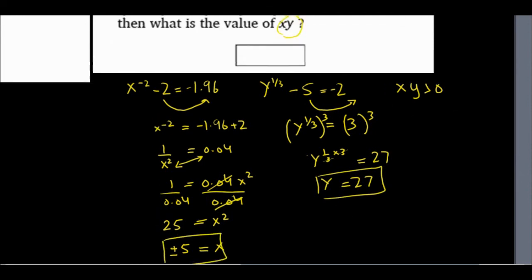And the question is asking for the value of x times y. One thing to be careful, x has two values. So which value should I pick? Well, the third condition given in the problem is that the product of x and y has to be positive greater than 0, which means x can only be 5.